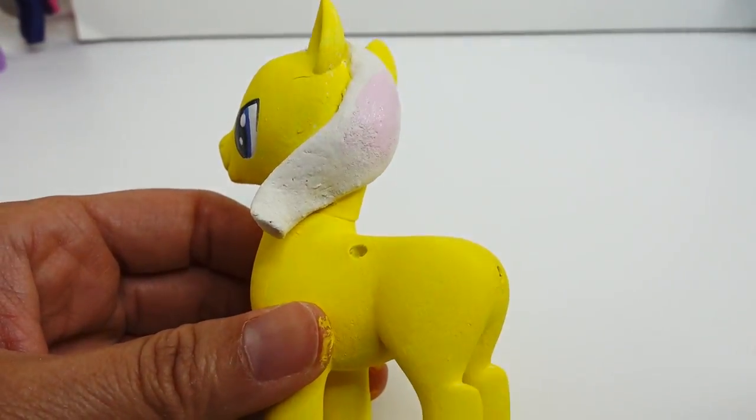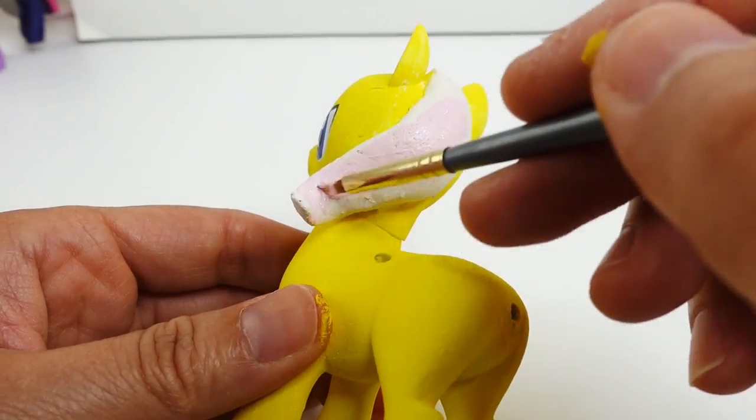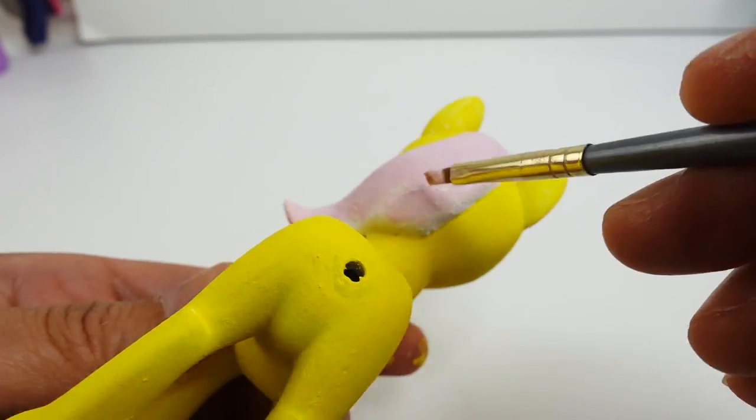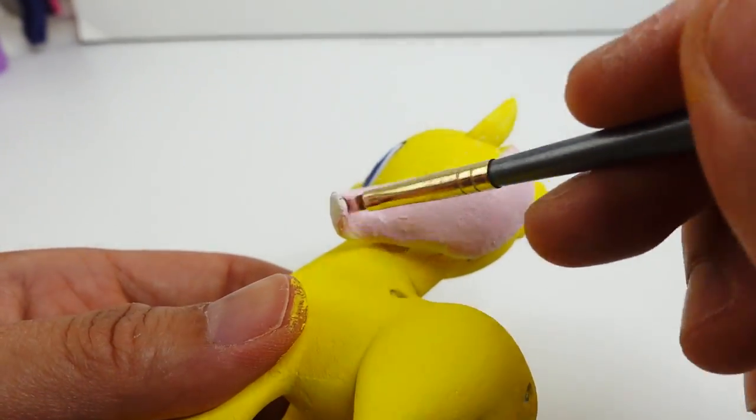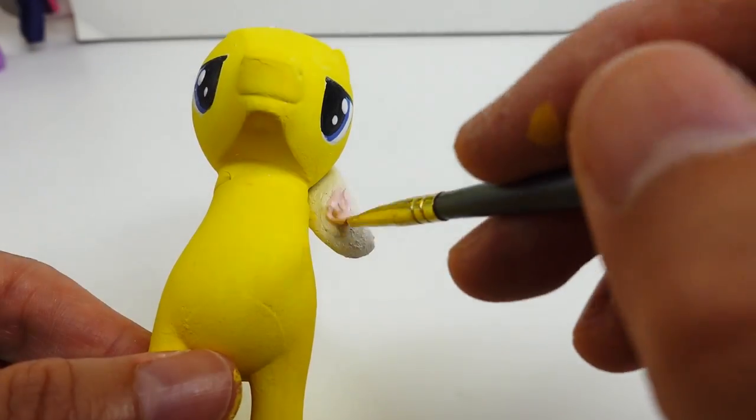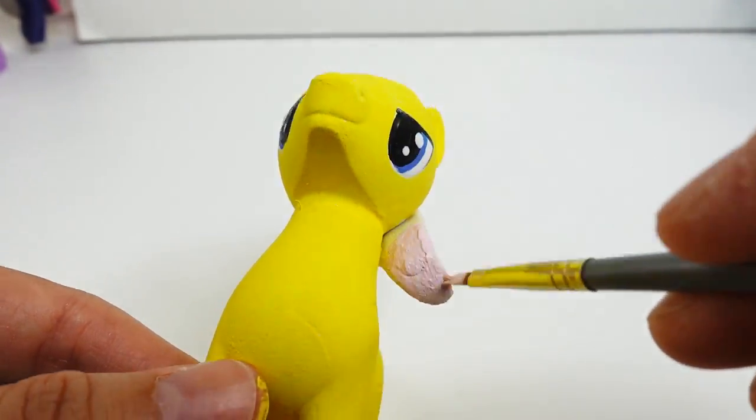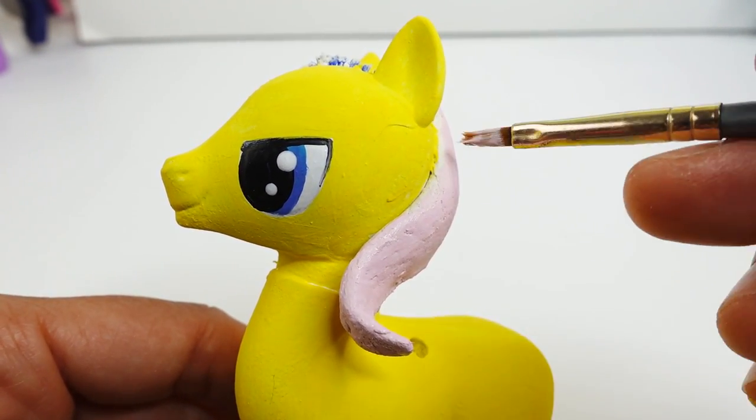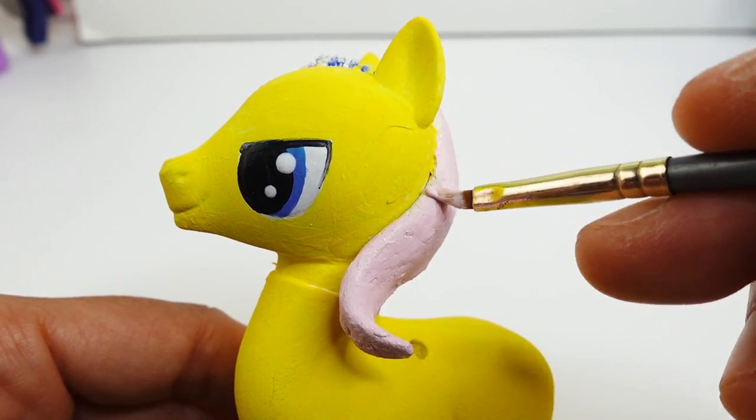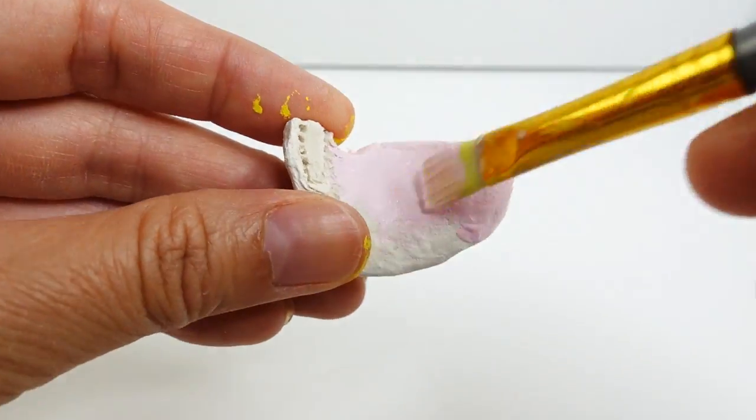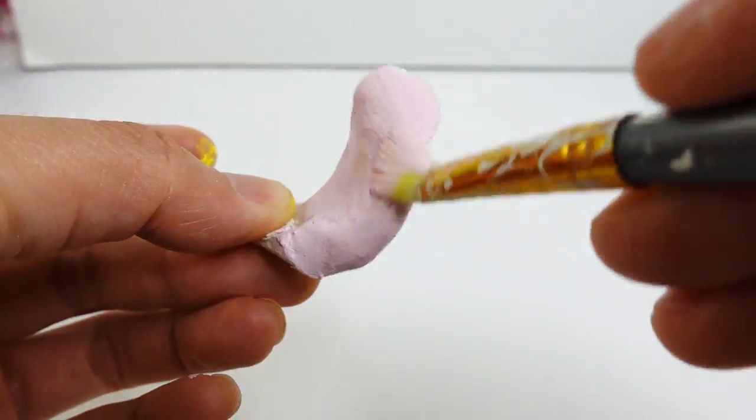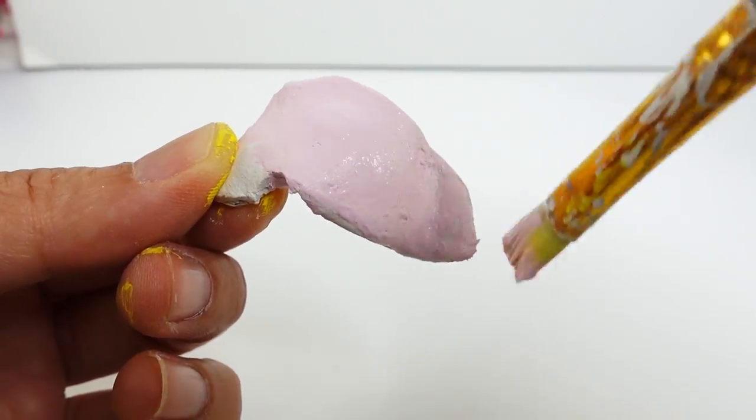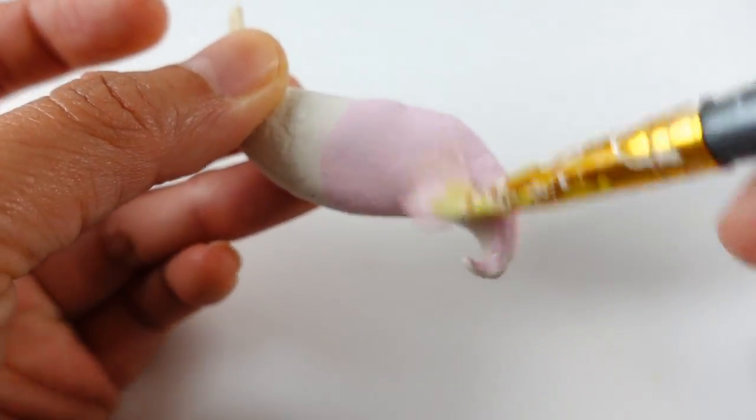Next, we'll paint the mane light pink. For the tail, we'll also paint it light pink.